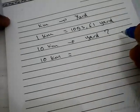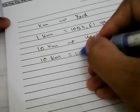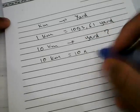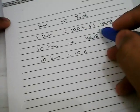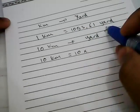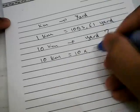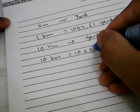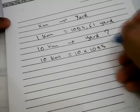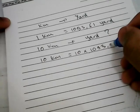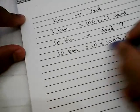It equals to, we need to write this 10 again over here. You need to multiply this 10 with 1093.61 yards. Because we want to convert kilometers here, so you need to multiply this number with this one. Let's write down 1093.61 yards.